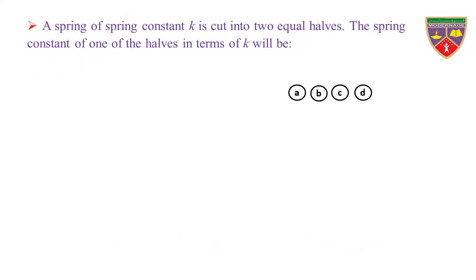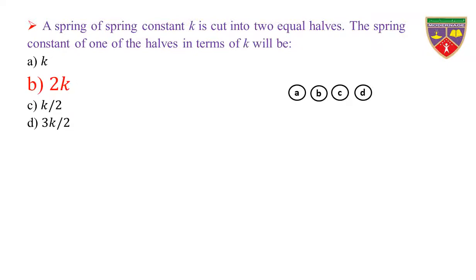A spring of spring constant K is cut into two equal halves. The spring constant of one of the halves in terms of K will be: Option A: K. Option B: 2K. Option C: K by 2. Option D: 3K divided by 2. The key is 2K. Therefore, the correct option is B.